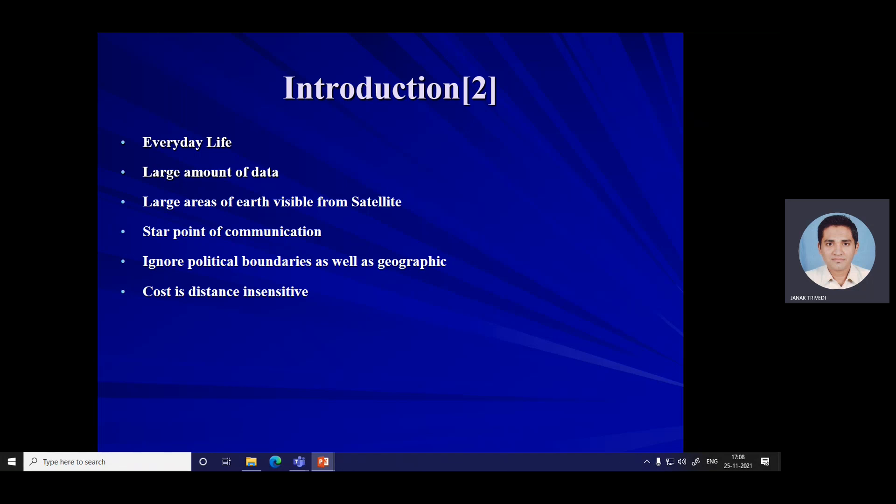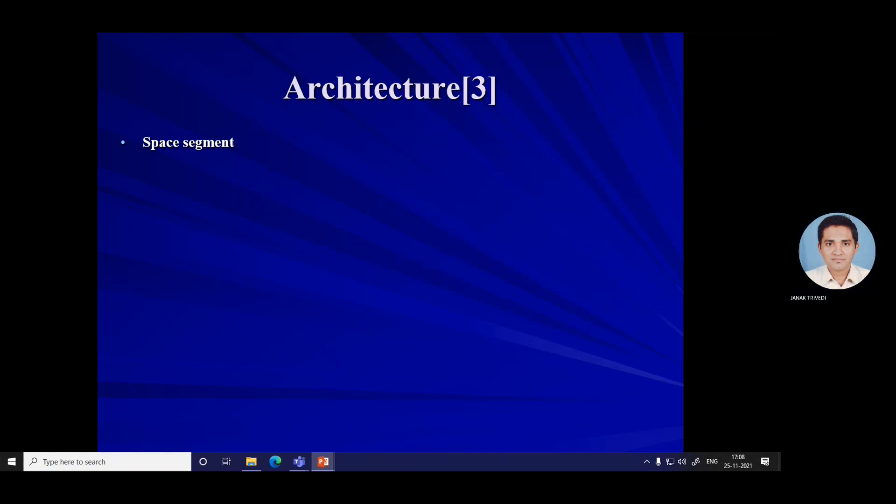Satellite communication propagation is broken down into two areas or segments: the space segment and the ground segment. The space segment includes the satellite in orbit in the system and the ground station that provides the operational control of the satellite in orbit.